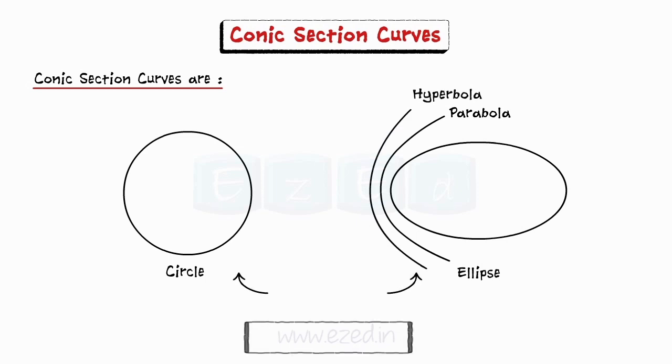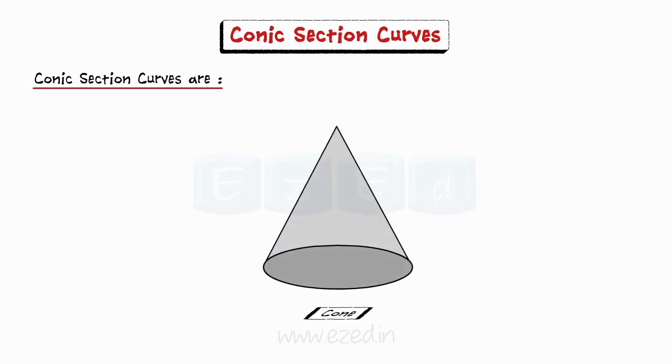These curves are called conic sections because these curves are generated by taking various sections of cone. A cone has apex, generators, axis and base.